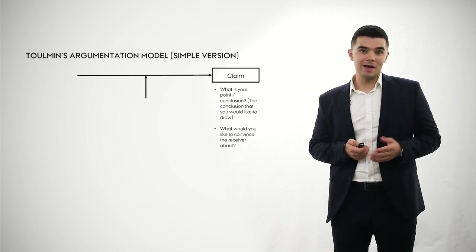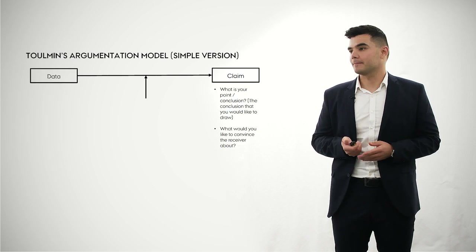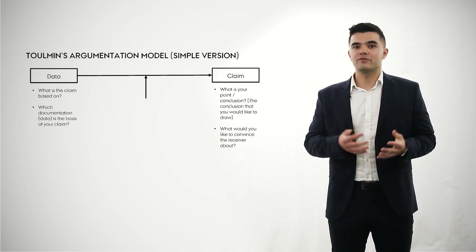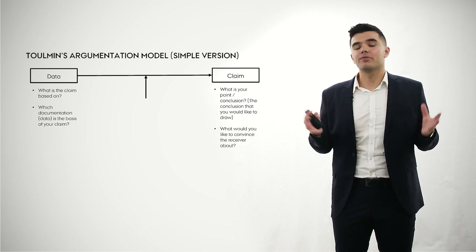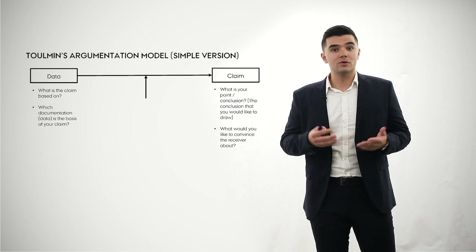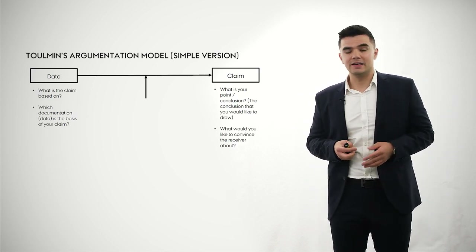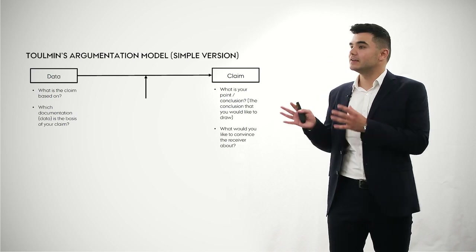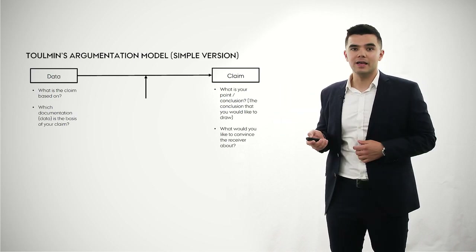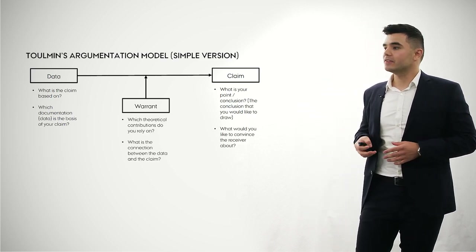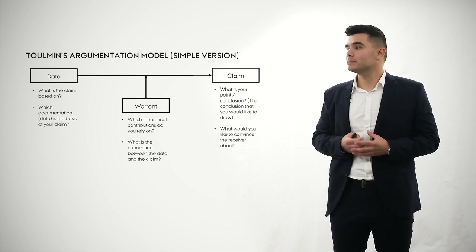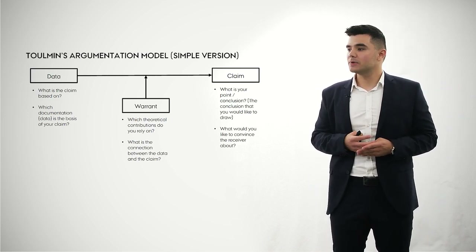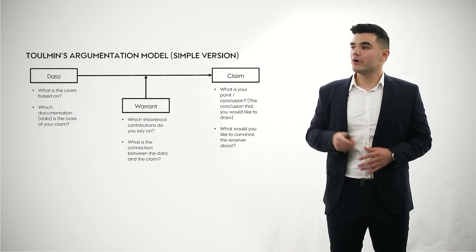The receiver in your case is the examiner that you have to convince about something. The claim is based on data, which provides documentation for your claim. Data can be a broad thing: tables, numbers, figures, and text material. In an exam situation, the most important data you have is the case text. But it is not enough to just have data and a claim — you also need a warrant to ensure there is a theoretical and logical connection between the claim and the data, drawing on relevant theoretical contributions.